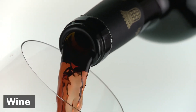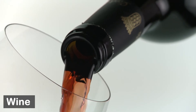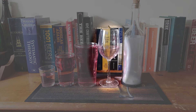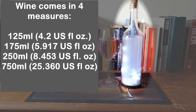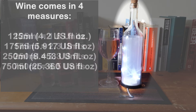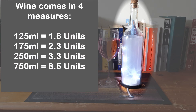Last up is wine, which can vary between 11 to 16% ABV. Wine is served in four different measures in the UK: 125 ml, 175 ml, 250 ml, and 750 ml — or in other words, a bottle. A 125 ml glass is 1.6 units, a 175 ml measure comes in at about 2.3 units, the largest individual measure of 250 ml sits at around 3.3 units, and your average bottle of wine lands at around 8.5 units.